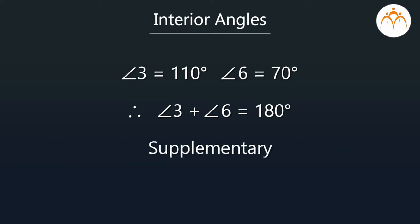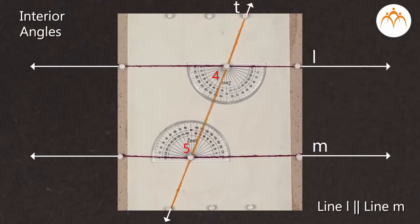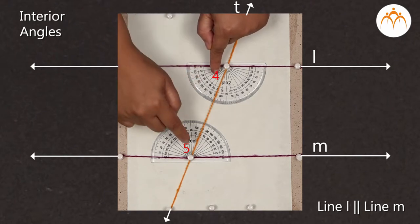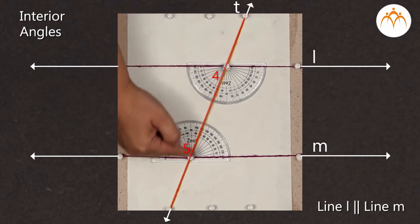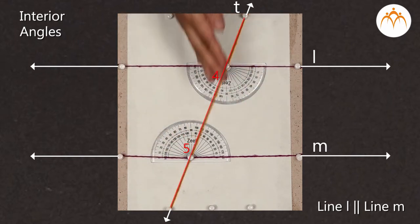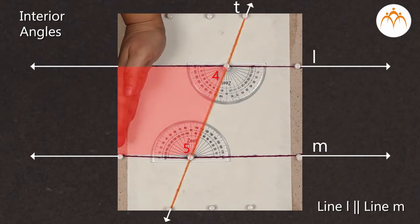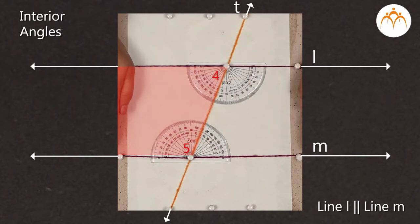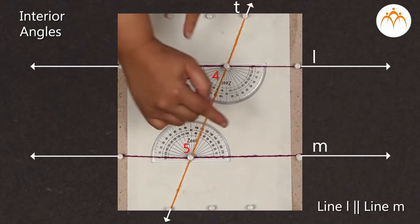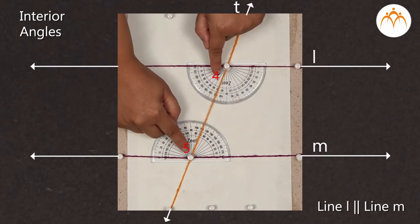That means these interior angles are supplementary. Similarly, angle 4 and angle 5 lie on the same side of the transversal T — in this case, on the left side — but in the interior of the region formed by line L and line M. Hence, they form the second pair of interior angles.